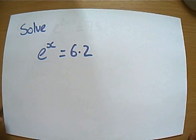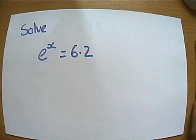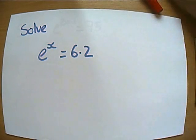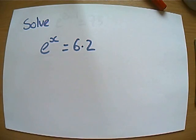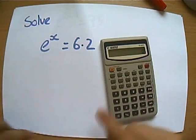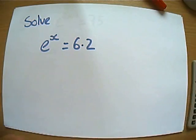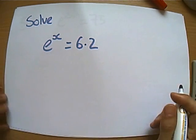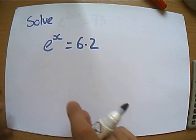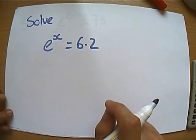What about this example? e to the power of x is 6.2. Hopefully you'll remember from core 2, we've got this equation, solve e to the power of x is 6.2. You could get your calculator out and try doing e to the whatever until you found a number that was close. But what do we know? We know that if we take logs of both sides, and in this case we're going to take a log base e, a ln of both sides, because we've got an e floating around, let's see what happens.